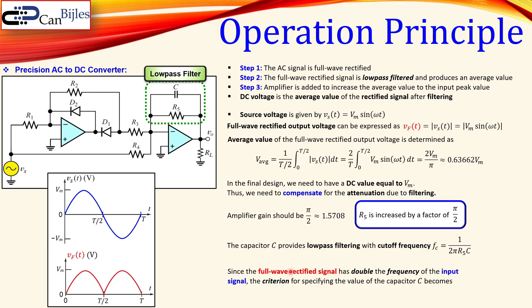Since the full-wave rectified signal has double the frequency — for example, if the input is 100 Hz, the rectified signal is 200 Hz — the criterion for the capacitor is given not by 2π but by 4π. The cutoff frequency is most of the time chosen as the lowest frequency you want to filter out, so you need to account for this in the fcutoff selection.